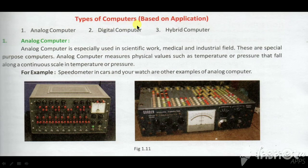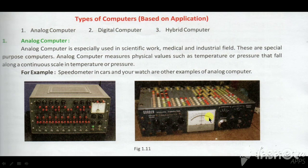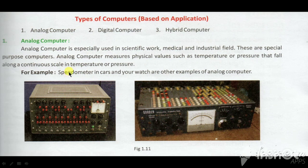Next is the Types of Computer. There are three types of computers in the world: Analog, Digital, and Hybrid. Analog computers are used for medical, industrial, and scientific work. Analog computer measures physical values like temperature, pressure, speedometer, and nanometer — every type of meter is controlled by this device. We call it the analog computer.